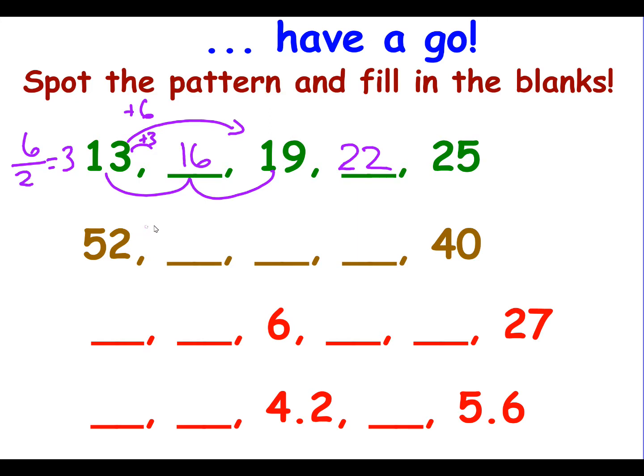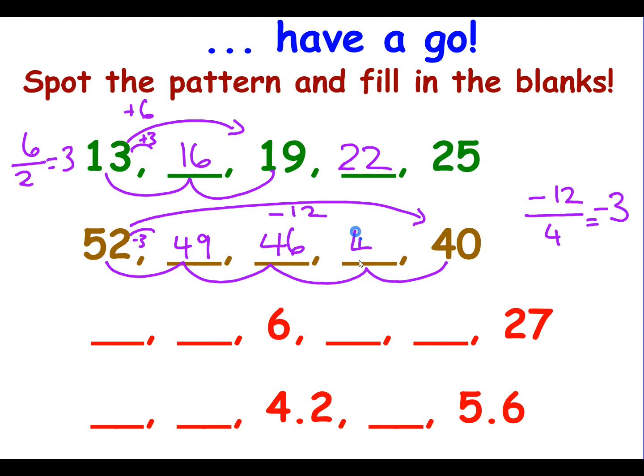Let's look at the next one, the intermediate question. The gap goes from 52 to 40. So it's gone down by 12. So we have minus 12 as our gap. We have 1, 2, 3, 4 steps. So minus 12 divided by 4 is minus 3. So each step goes down by 3. So we have 49, 46, 43 and 40.